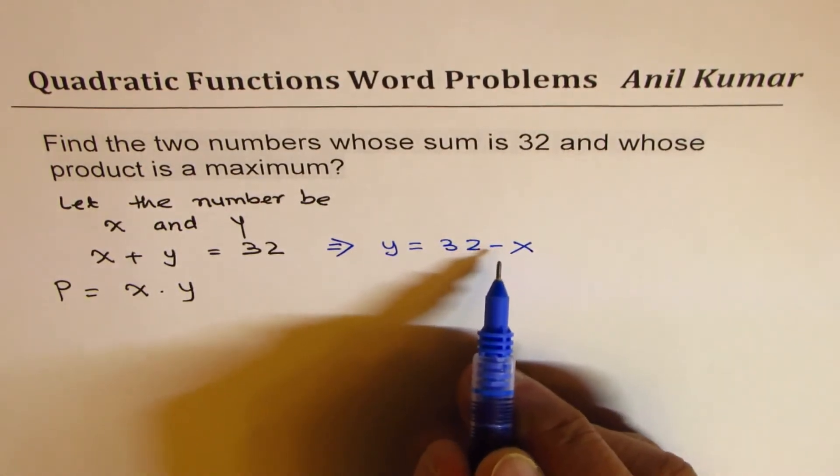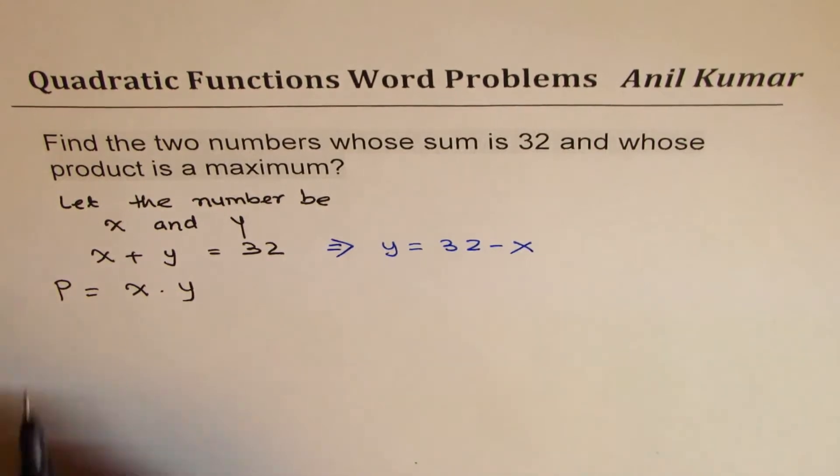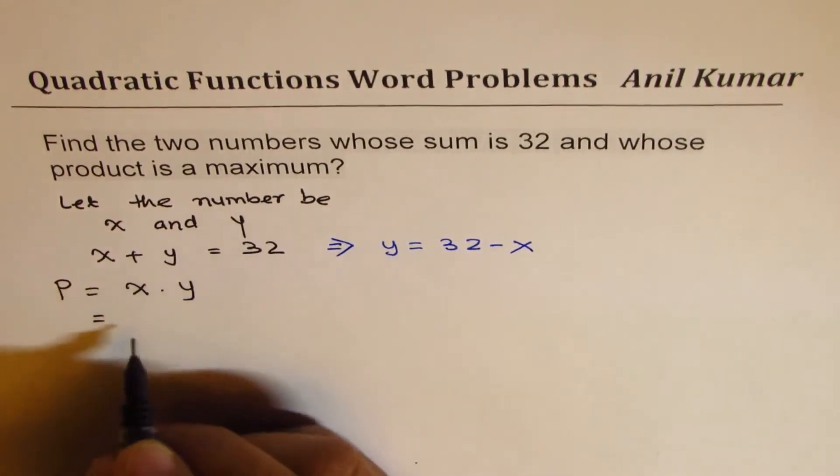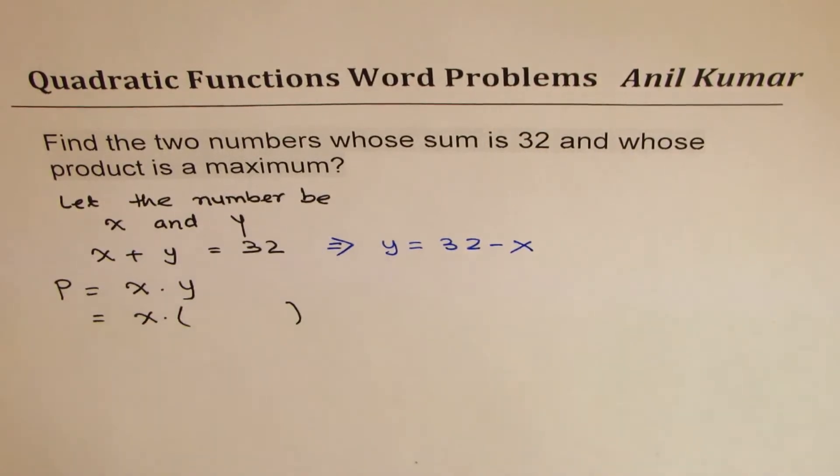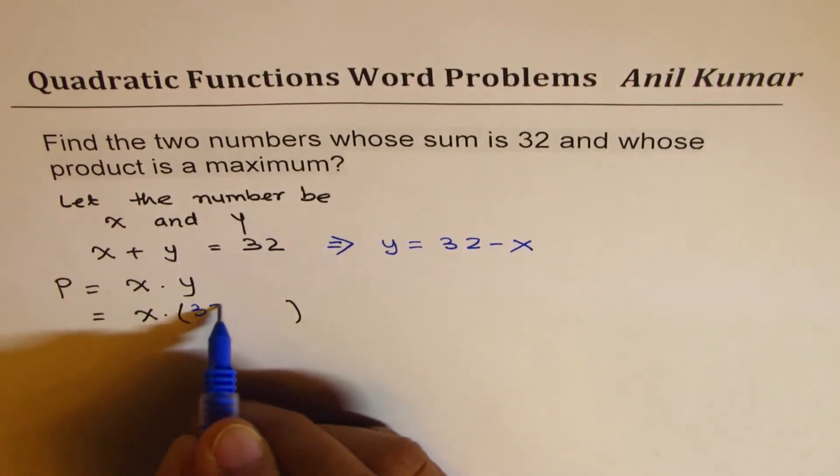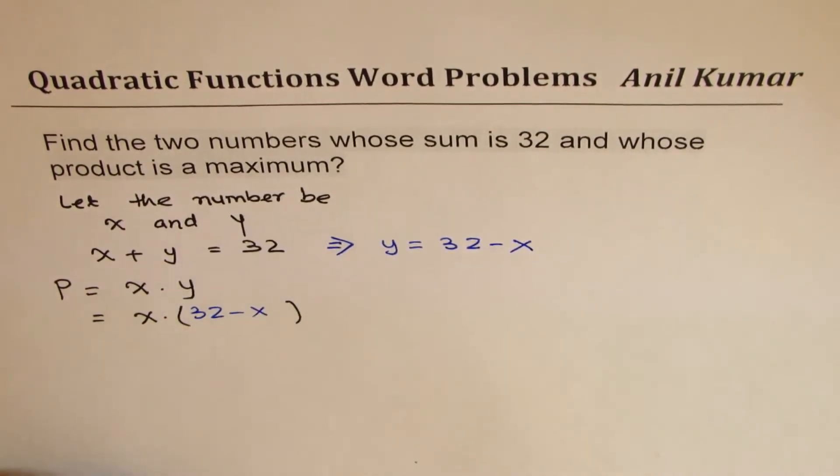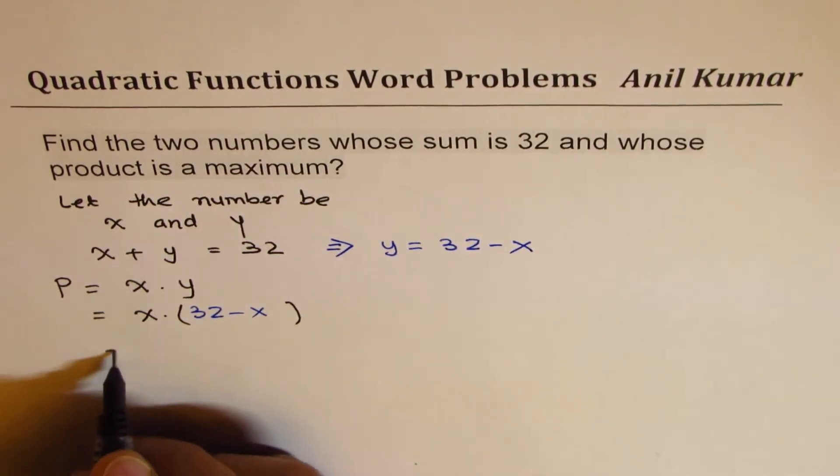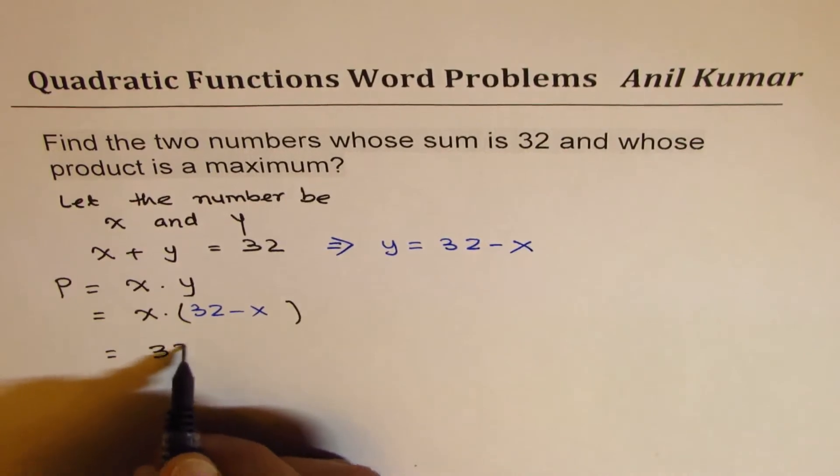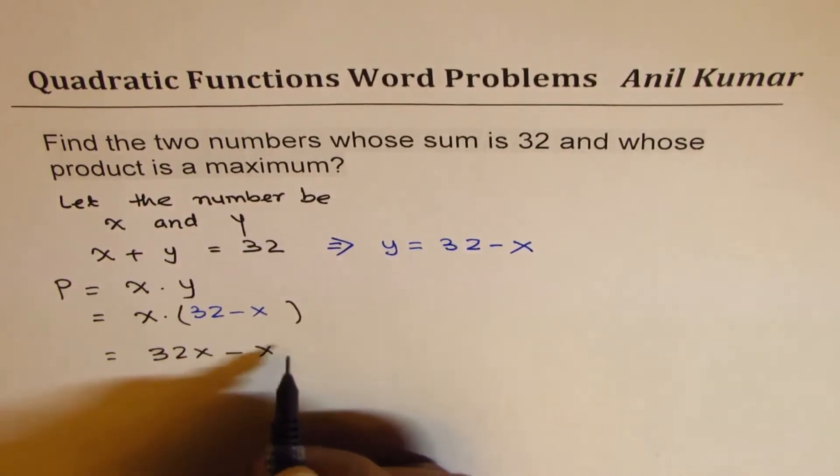So we are substituting this. We're seeing x times y which is 32 minus x. Now you have to just open the bracket, so you get 32x minus x square.